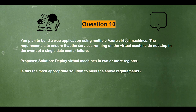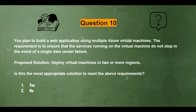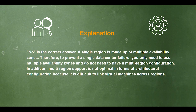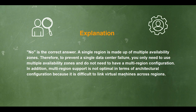Question 10. You plan to build a web application using multiple Azure virtual machines. The requirement is to ensure that the services running on the virtual machines do not stop in the event of a single data center failure. Proposed solution: deploy virtual machines in two or more regions. Is this the most appropriate solution? Options: 1) Yes, 2) No. The answer is option 2 — No. A single region is made up of multiple availability zones, so to prevent a single data center failure you only need to use multiple availability zones and do not need a multi-region configuration. Multi-region support is also not optimal architecturally, as it is difficult to link virtual machines across regions.